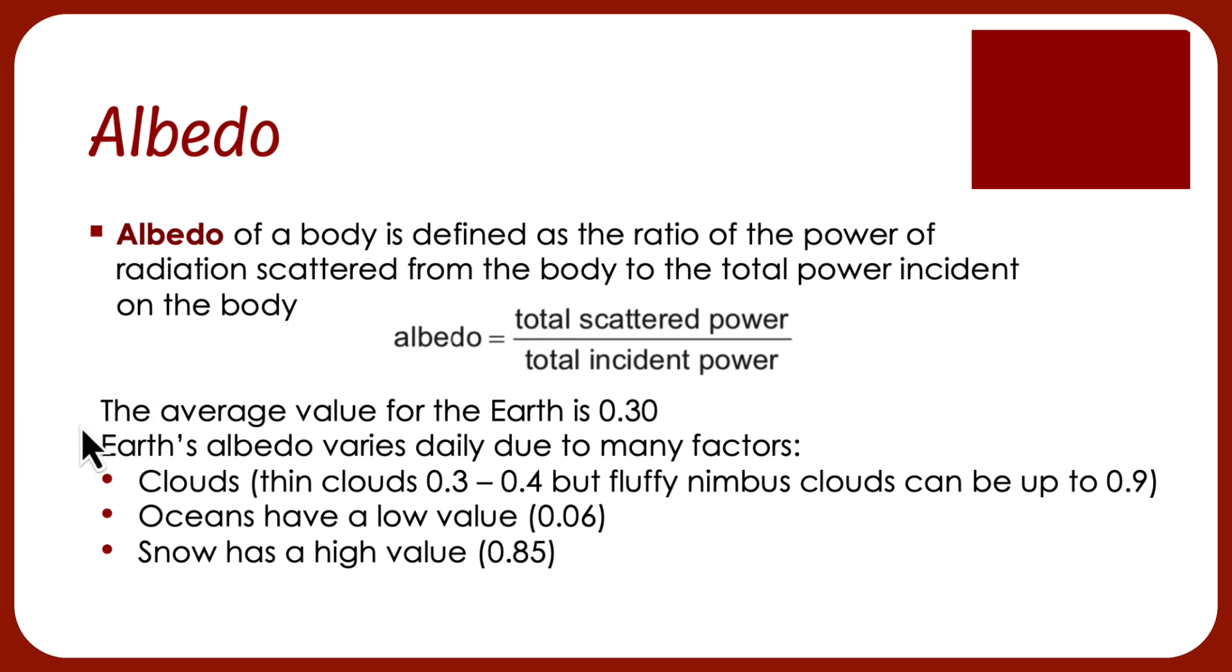Here we've got some average values for the earth. Obviously, it's going to change with different factors. Clouds are pretty good at scattering the light that comes in from the sun. Oceans are not very good. And snow, which is highly reflective, has a very high albedo value.